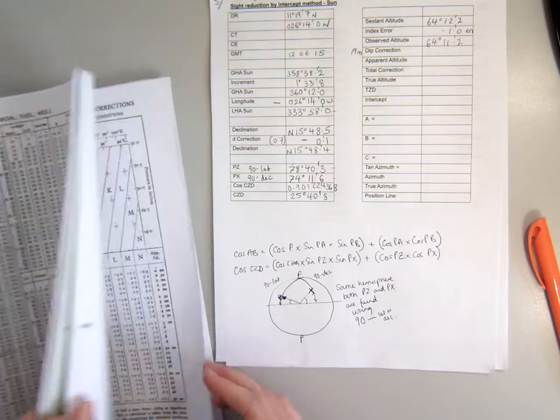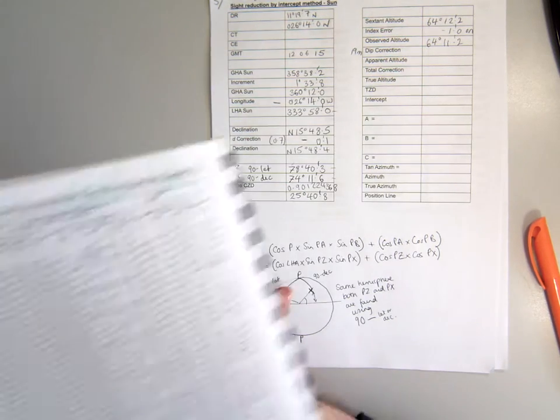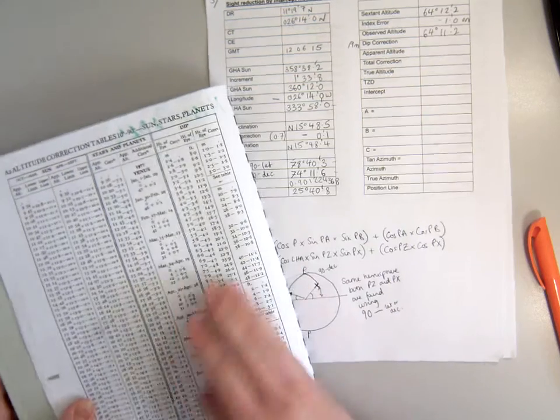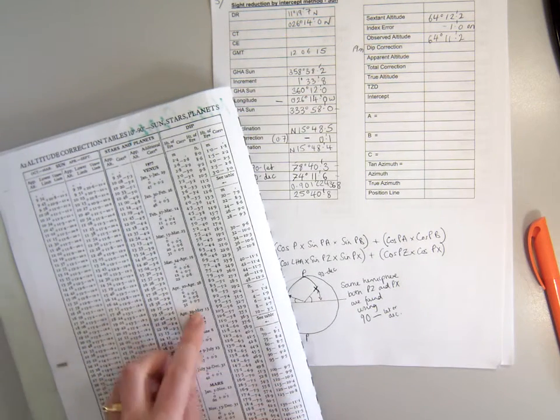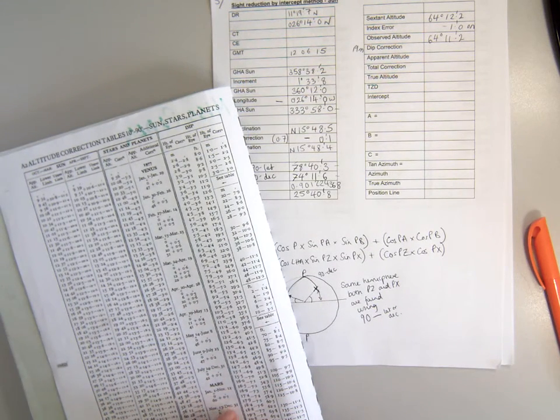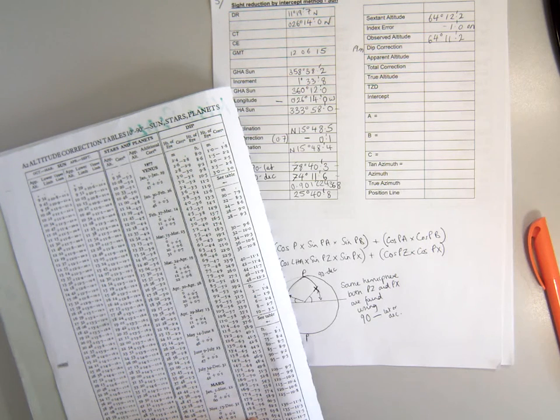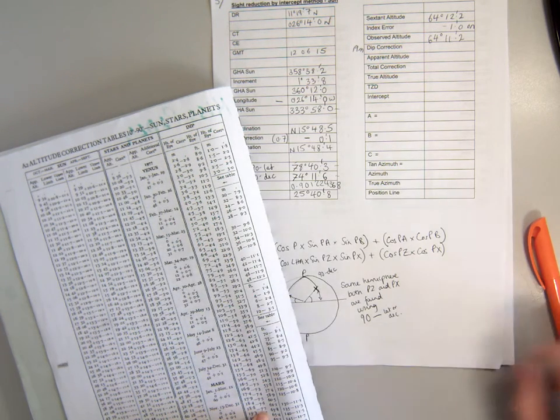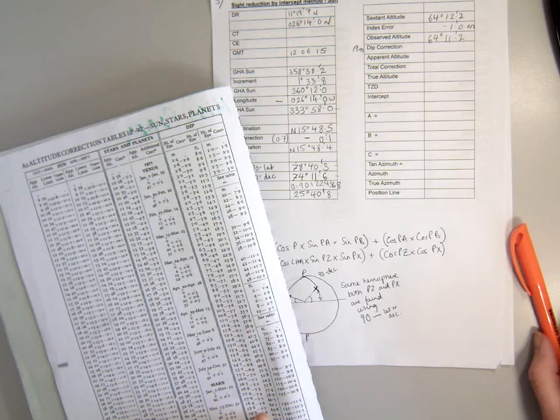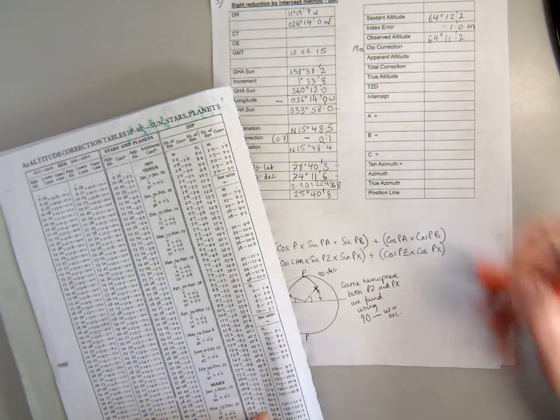And then we would go to the front page of the Almanac to find a dip correction. The dip correction for 19 meters is going to be between 18.8 and 19.3, so the correction we've got is minus 7.7.